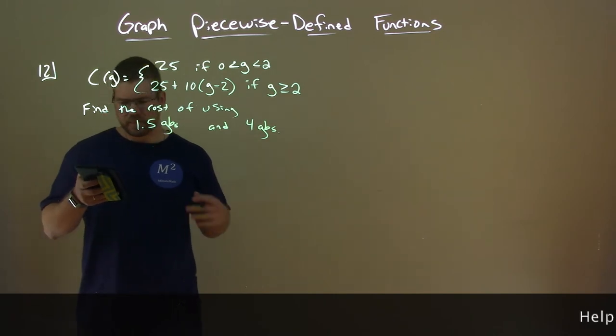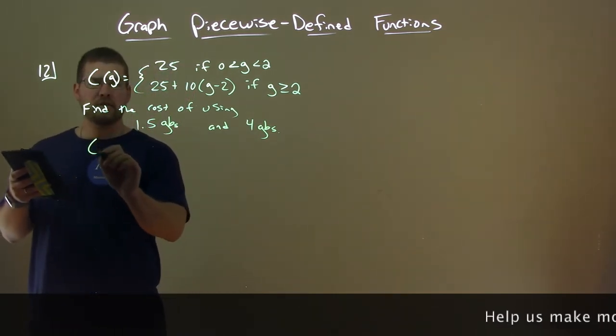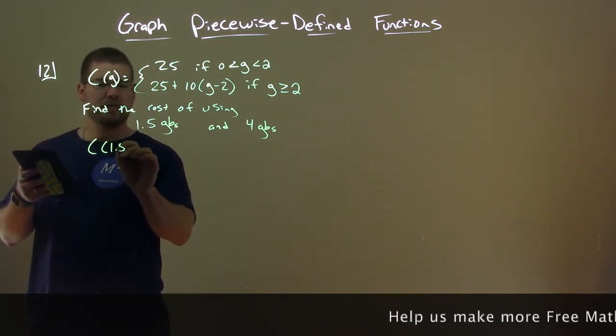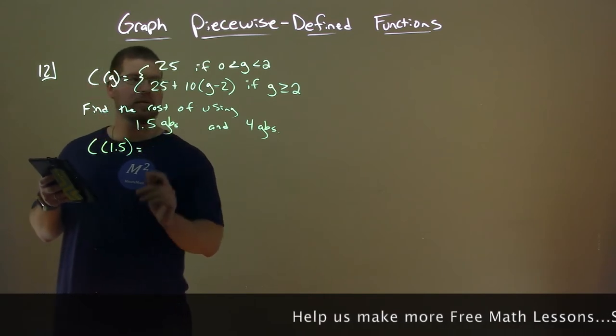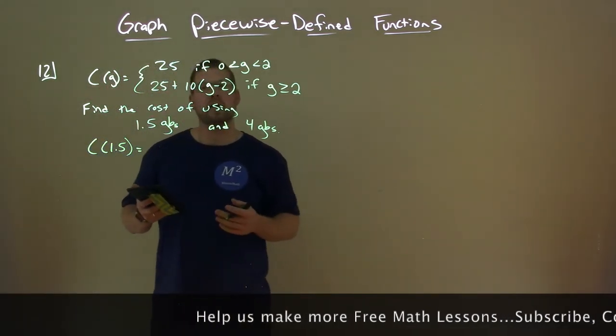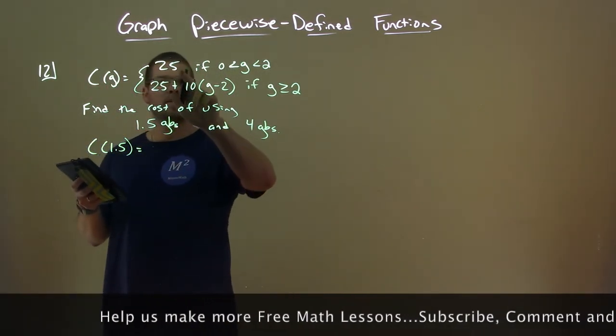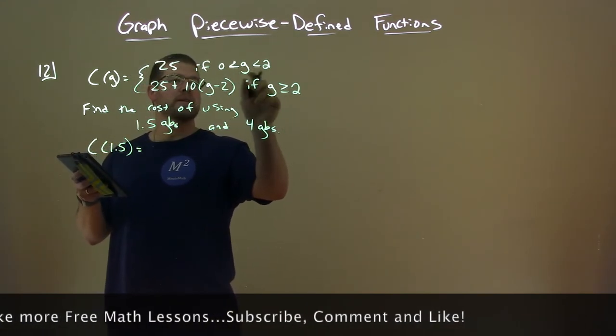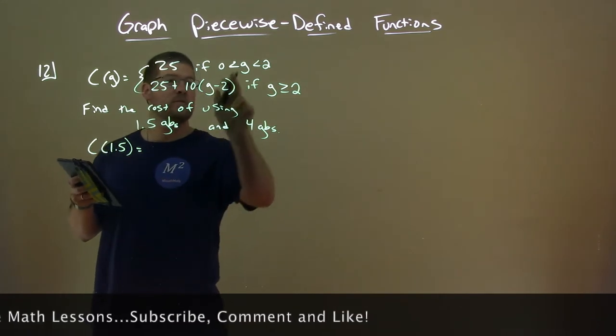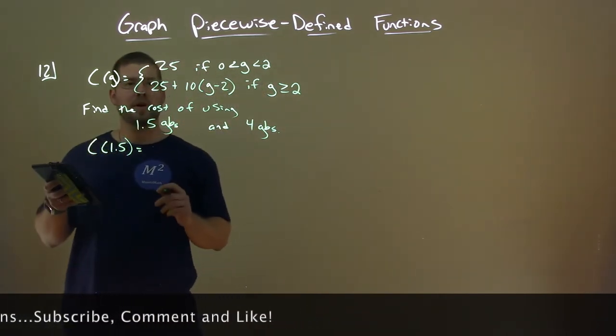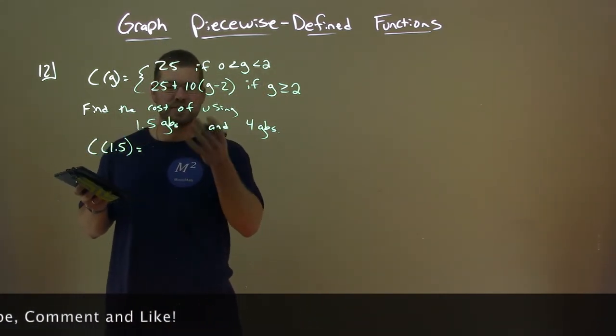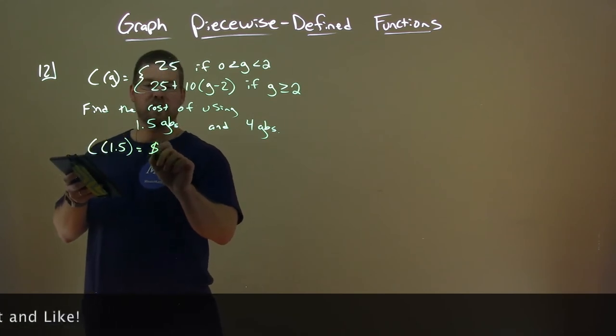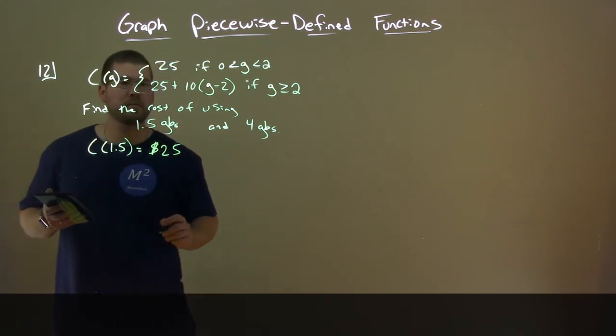So how do we do that? Well, the cost of using 1.5, let's plug that in for our g value. Well, what domain is 1.5 in? 1.5 is in the domain of the first part, right? From 0 to 2, so 1.5 is within that range. We use the first equation, there's nothing to plug in for g, it's just 25, so our value is just 25.